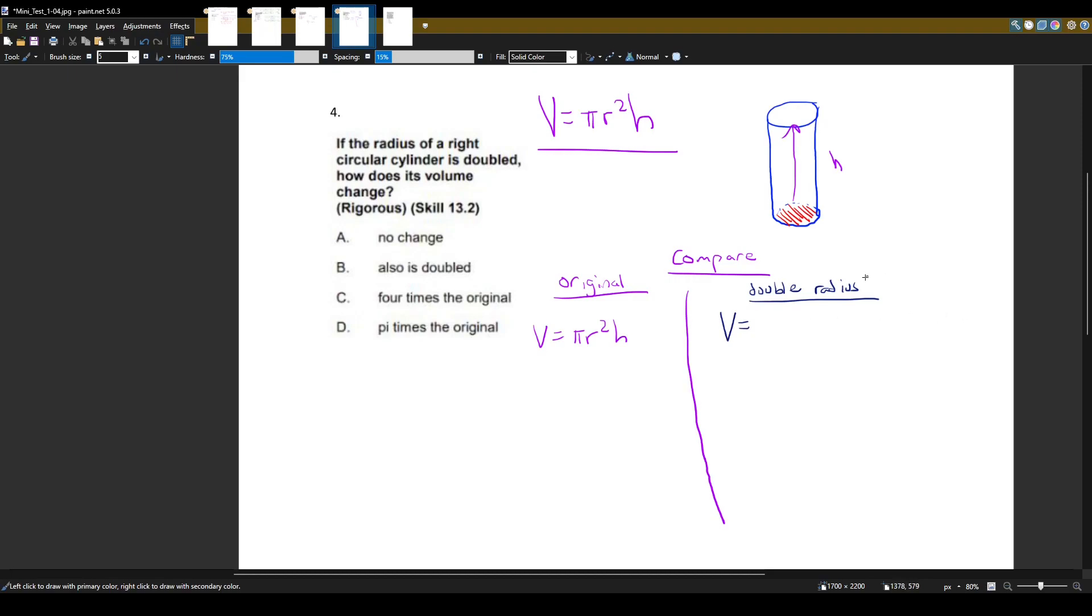So volume, r becomes 2r. So pi times 2r squared h. I replace this r with 2r because we doubled the radius.